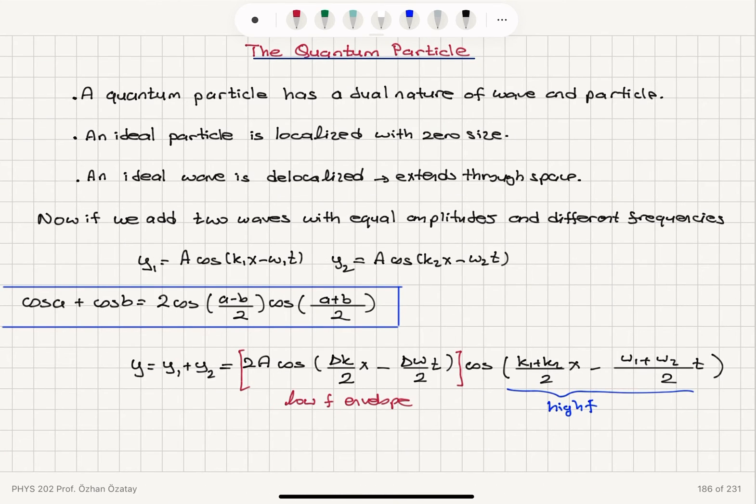Okay, so we talked about the nature of the quantum particle, dual nature, wave and particle. An ideal particle has zero size, an ideal wave extends through space, it's delocalized.